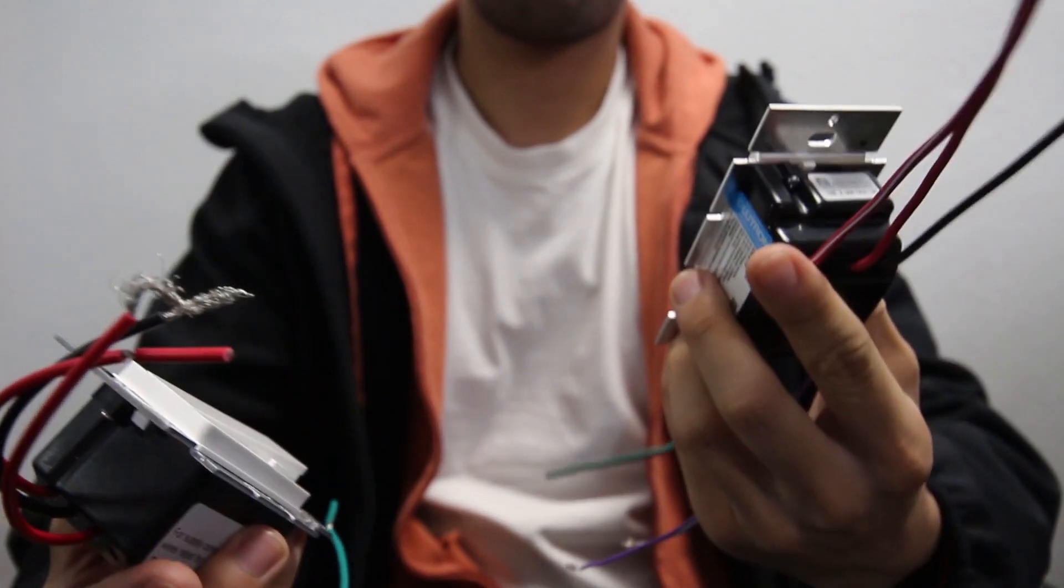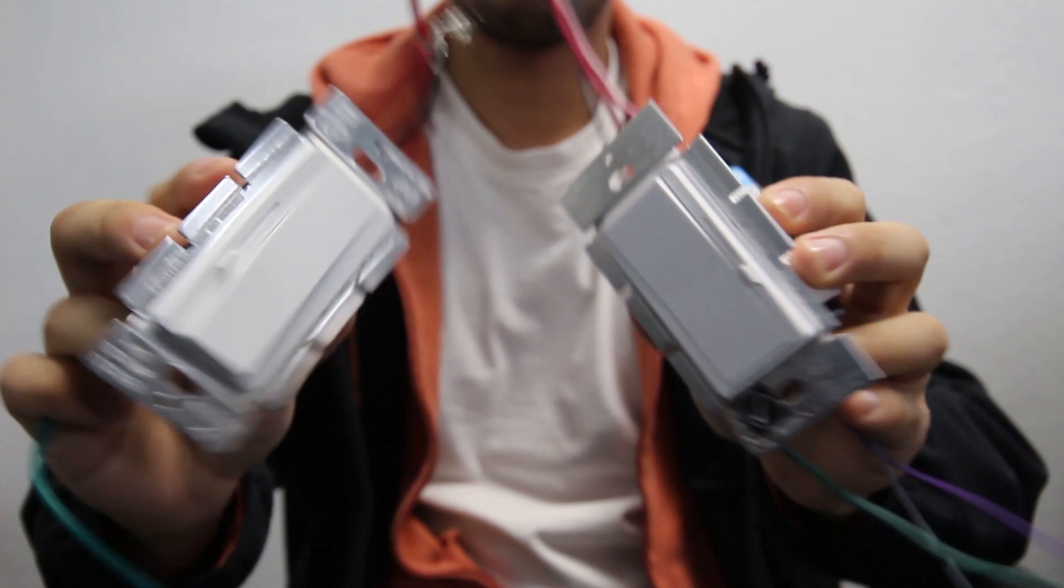Now not every dimmer will work with any light. Some people have called with concerns of flickering or humming noises. They're probably using LED CFL dimmers which are commonly sold in hardware stores but will not work with our commercial grade LED lights.